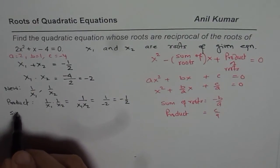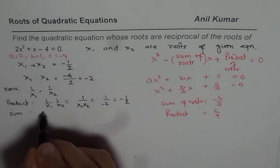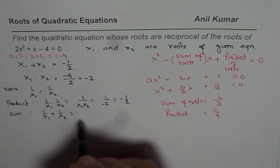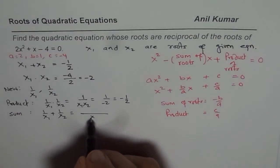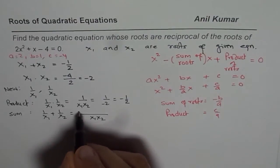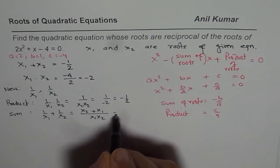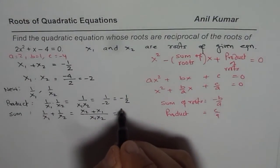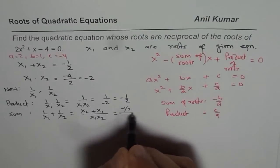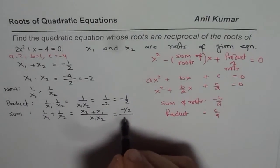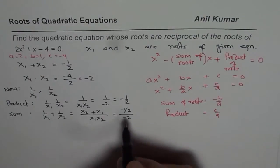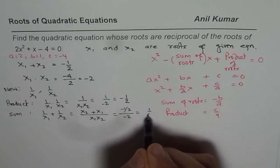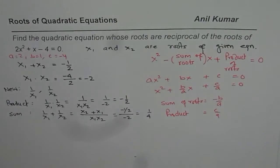Let us find the sum now. The sum of the roots will be 1 over x1 plus 1 over x2. Taking a common denominator, we get (x2 plus x1) over (x1 times x2). Now, x2 plus x1 equals x1 plus x2, which is minus one-half, and x1 times x2 equals minus 2 in the denominator. So, minus and minus becomes plus, giving us 1 over 4. So the sum of the new roots is 1 over 4.